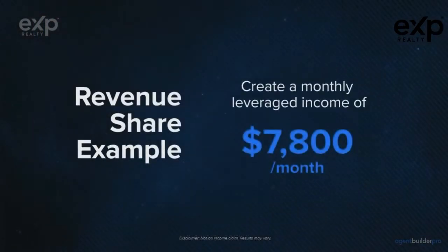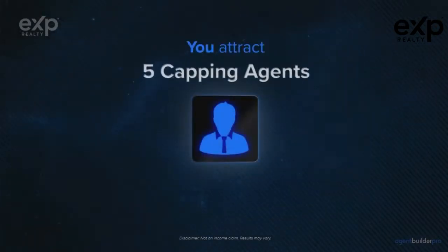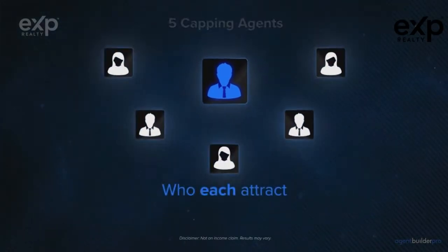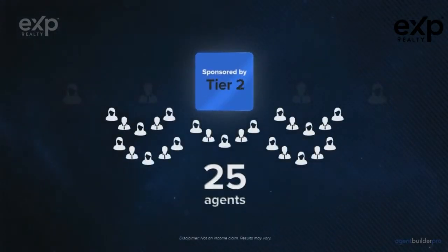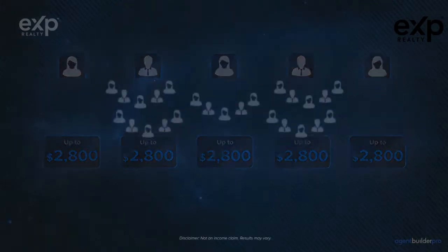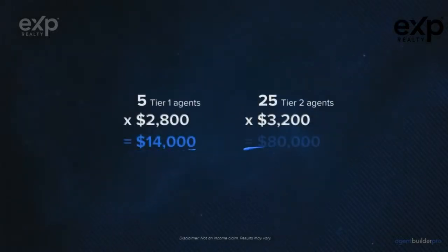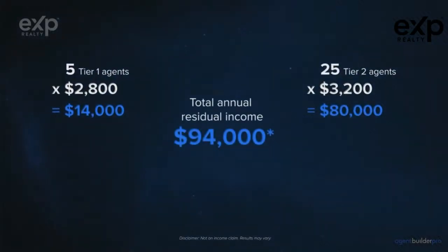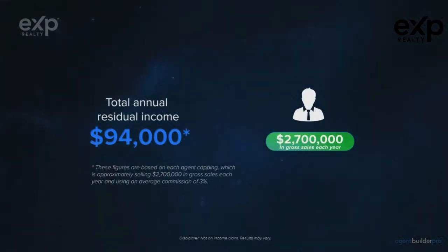Here's a quick example: you personally attract five capping agents, and each of those five attract five more capping agents. That gives you five agents on tier one and 25 on tier two. For the five capping agents on tier one you earn up to $2,800 each; for the 25 capping agents on tier two you earn up to $3,200 each — giving you an annual leveraged income of up to $94,000. These figures are based on each agent capping, which means selling approximately $2.7 million in real estate per year at a 3% commission.